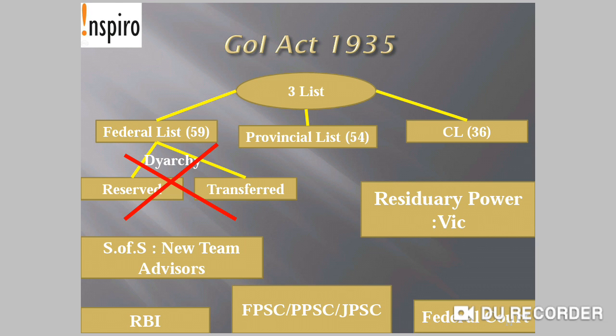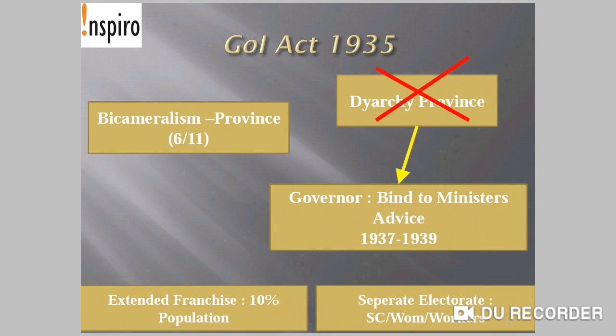Residuary power — meaning whatever subjects were not enumerated under any of the lists — was vested with the Viceroy. Under the Government of India Act 1935, the concept of a central bank, the RBI, came about, with the RBI formed in 1935. Federal PSC, Provincial PSC, and Joint PSC provisions were introduced. A Federal Court, equivalent to the Supreme Court, was also introduced. Additionally, bicameralism was introduced in the provinces — out of 11 provinces, 6 got bicameralism.